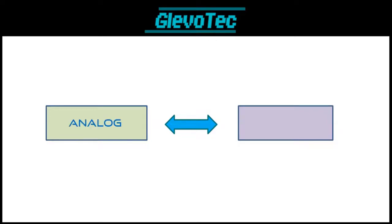First of all, in electronics there are two major classes — they are in fact quite different. I'm talking about analog electronics versus digital. Analog is how all electronics used to be made, and nowadays everything seems to become digital. But what is the difference? Let's take a look at what analog and digital actually means.